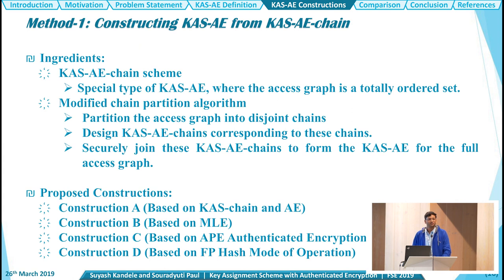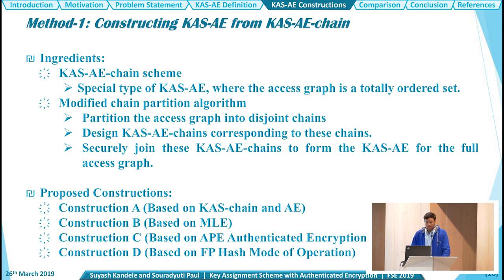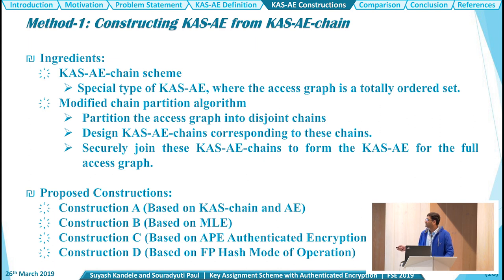Now we move on to the CAS-AE constructions. The first method is to construct CAS-AE from a CAS chain. A CAS-AE chain is a special type of CAS-AE where the access graph is a totally ordered set — there is no hierarchical structure where a node has multiple subordinate nodes; every superior node has just one subordinate node. The second ingredient used here is the modified chain partition algorithm. This is a divide-and-conquer algorithm where we first partition the entire access graph into disjoint chains, then design a CAS-AE chain for each chain, and finally securely join each CAS-AE chain to form the CAS-AE for the full access graph. In the paper we propose four constructions: A, B, C, and D, which share the modified chain partition algorithm and differ only in the CAS-AE chain schemes.